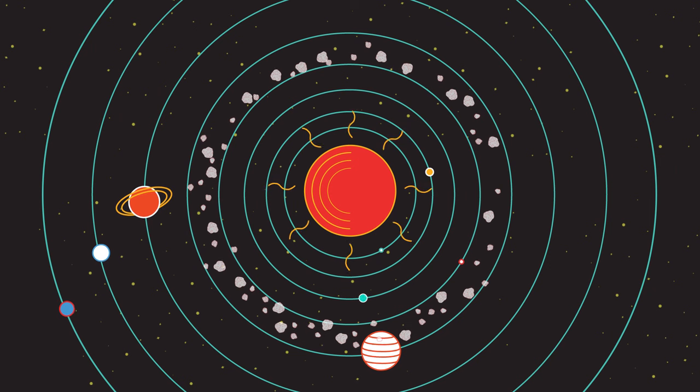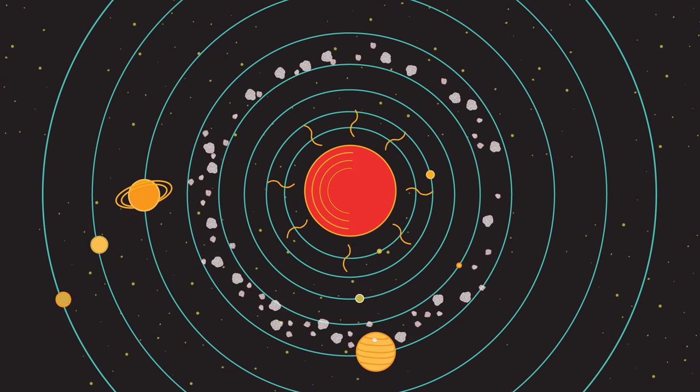Our solar system consists of a central star, our Sun, and eight orbiting planets.